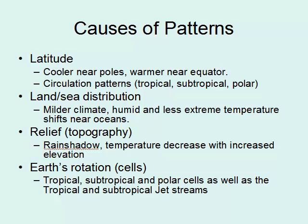Some of the causes of these patterns include latitude — cooler near the poles, warmer near the equator — and the circulation patterns we've discussed. Land-sea distribution also plays a role: closer to the ocean we have milder climate with less extremes. Relief creates the rain shadow effect, especially where we live in Hood River and Portland. As you go to higher elevation you have decreased temperatures. And of course, the Earth's rotation helps develop the different cells, the easterlies, the westerlies, and the two different jet streams.